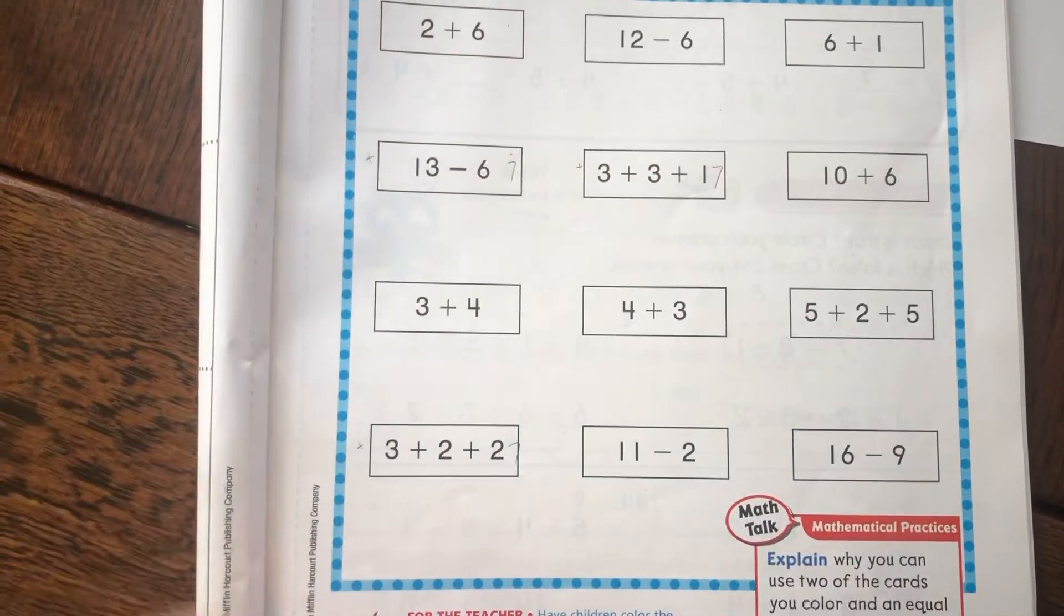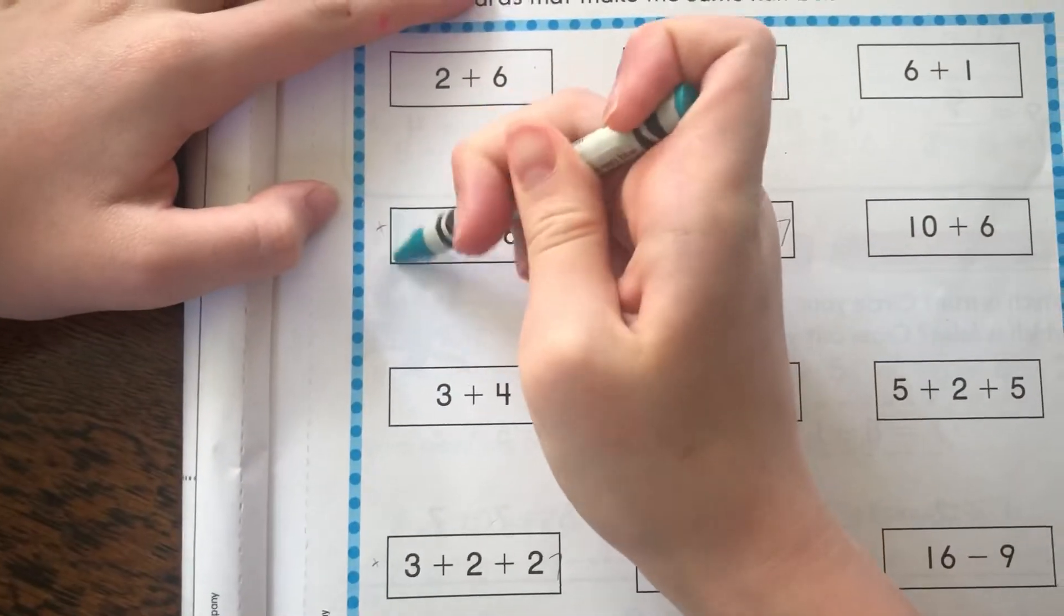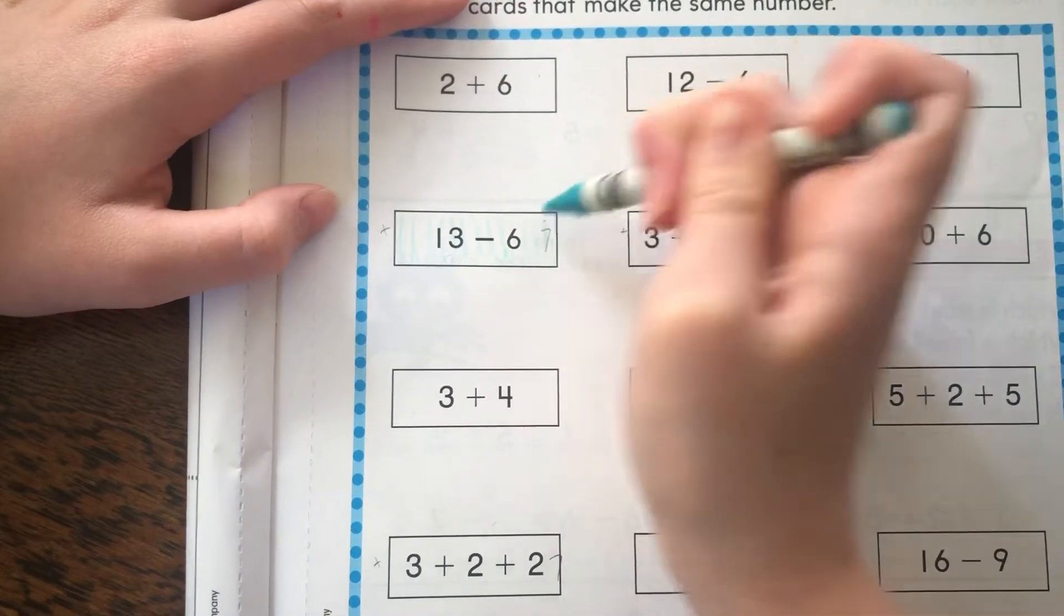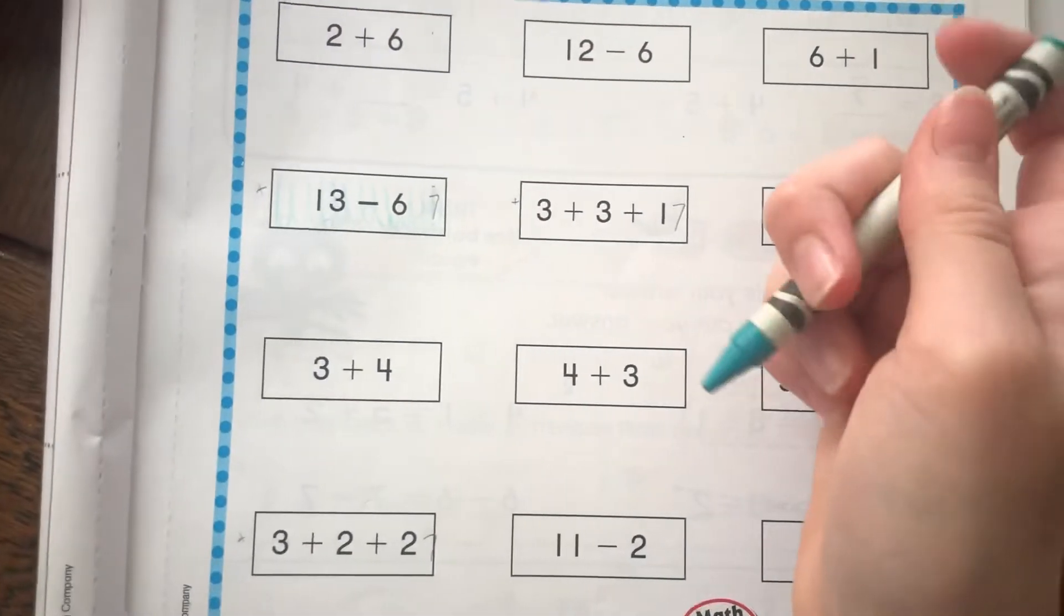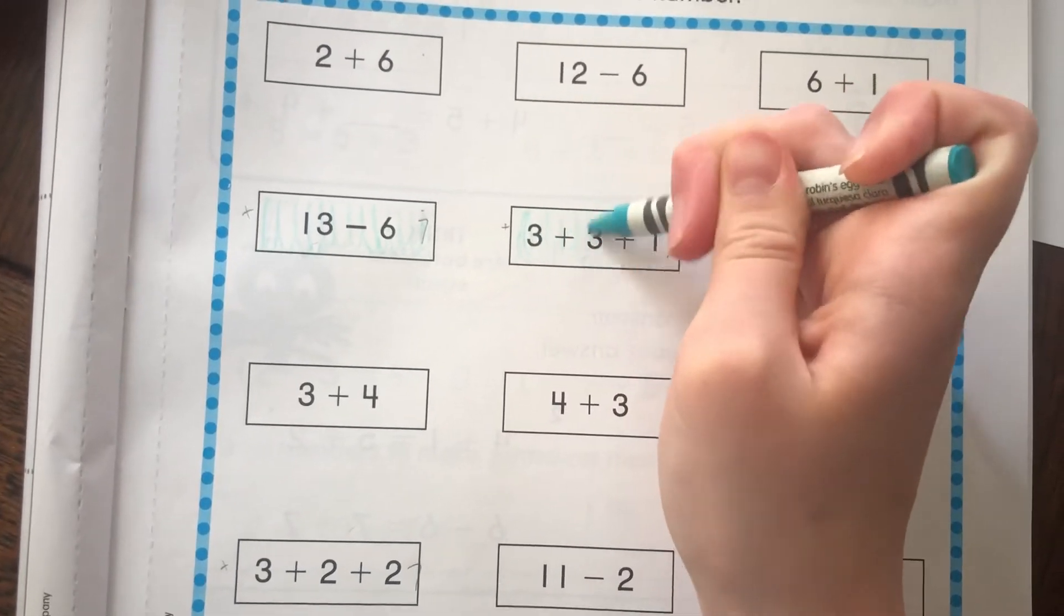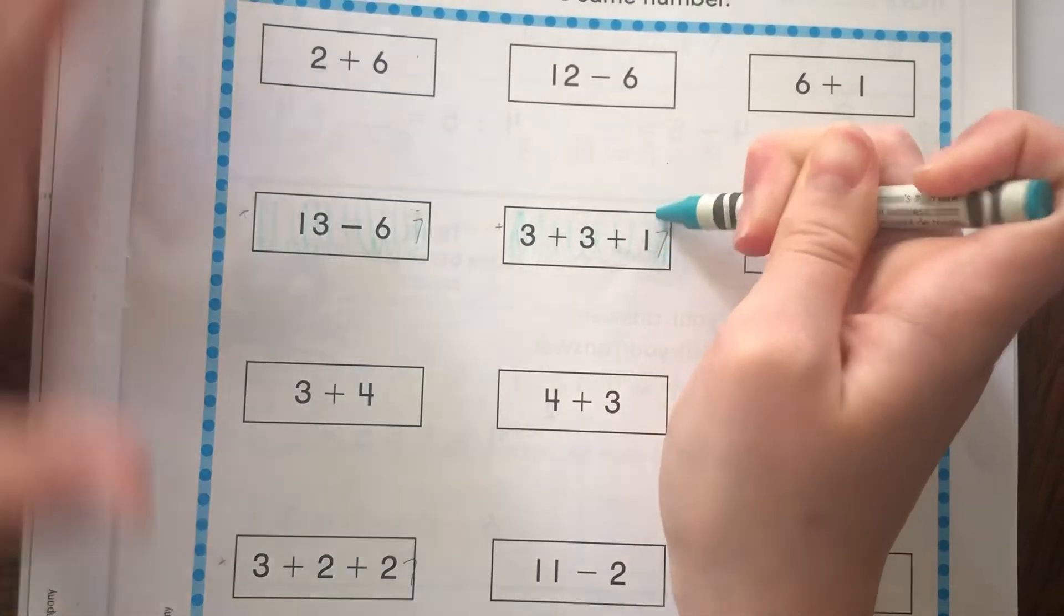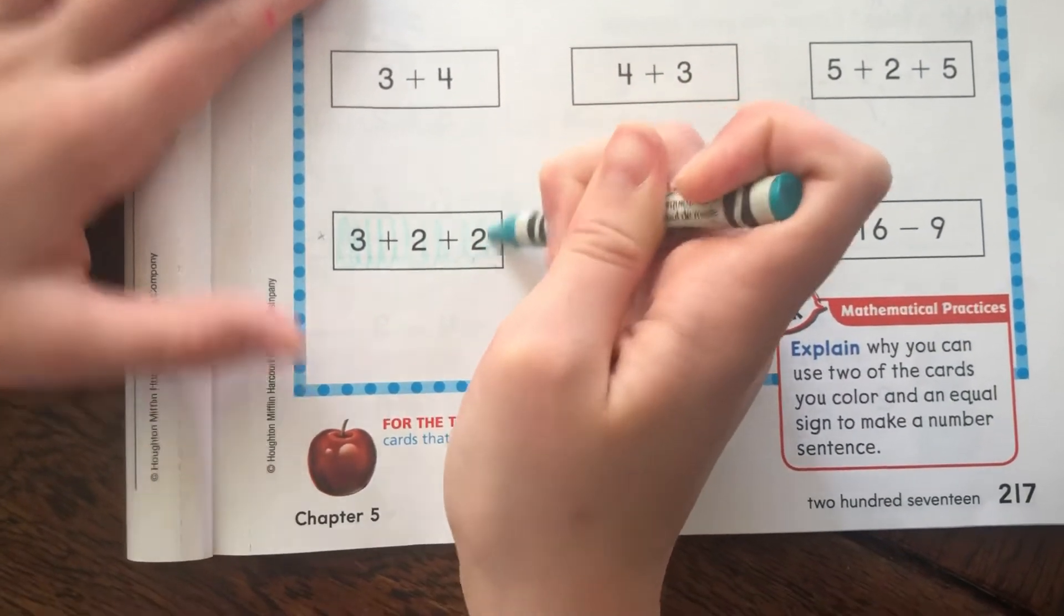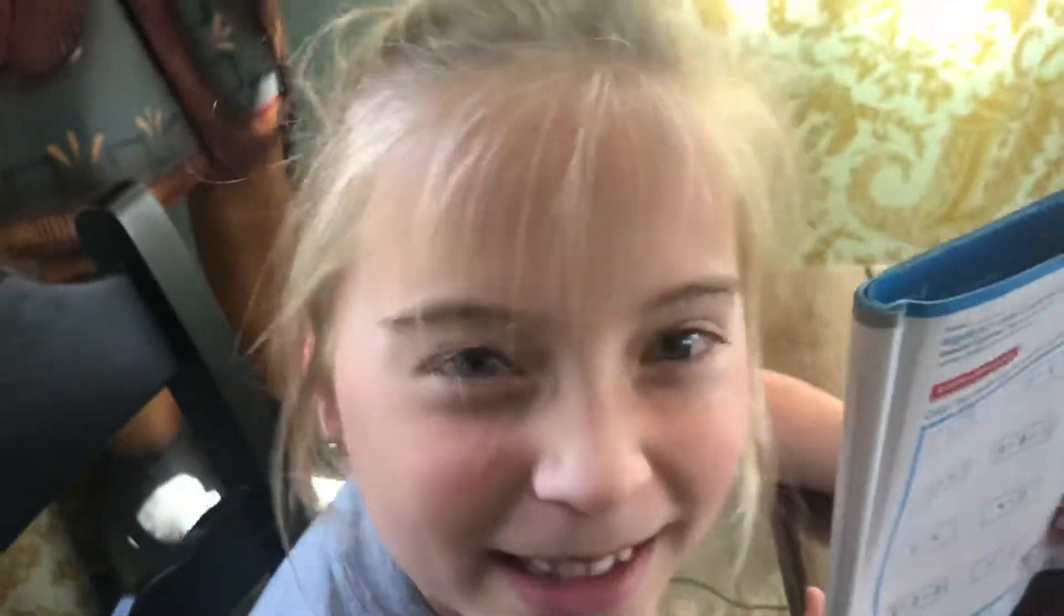And it said in the book to color all of the ones that have the same number, and that makes sense. So I'm going to color this one because it equals 7. I like the way you're coloring lightly so you can still see the problem. Thank you. And then I'm going to color this one because it also equals 7. And then I'm going to color this one because it also equals 7.